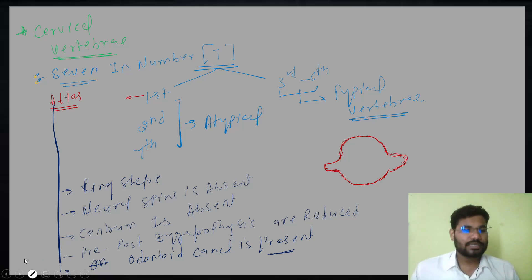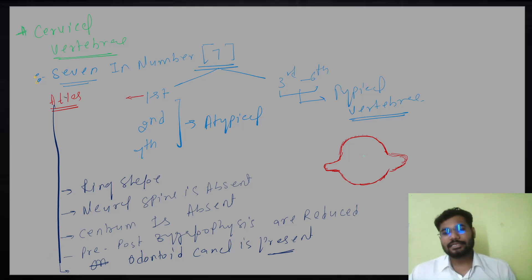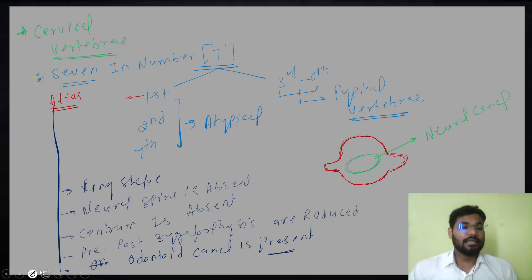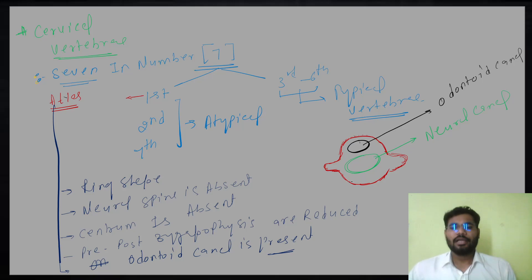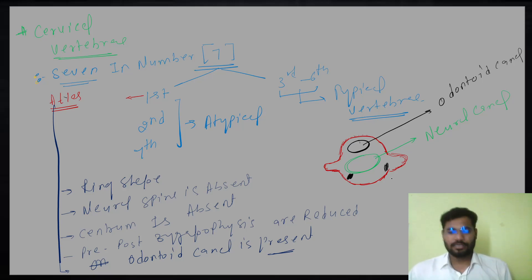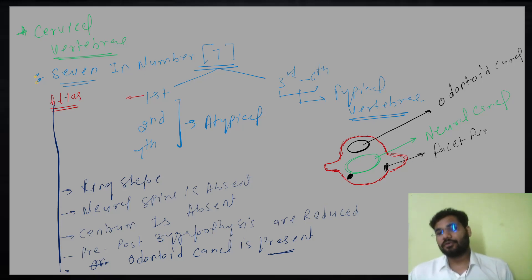Neural canal is present in all vertebrae — through this the spinal cord passes. On the upper side of the ring, there is another opening called the odontoid canal. These are reduced transverse processes. Two facets are present here — these are called facets for the occipital condyle.